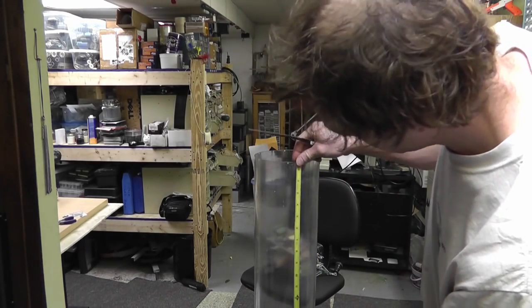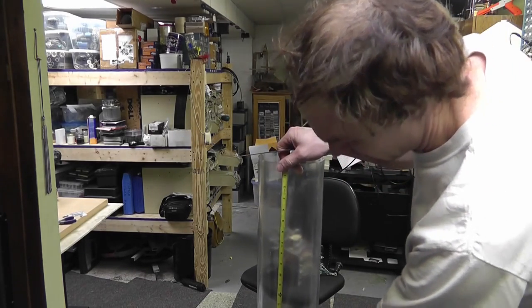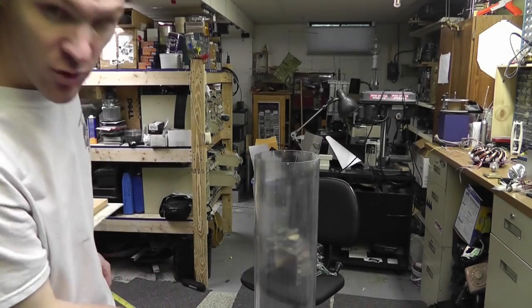I measured down 16 inches and I moved it a little and I marked it, and I moved it a little and I marked it, and I did that all the way around. That gave me a nice square marking on my tube.